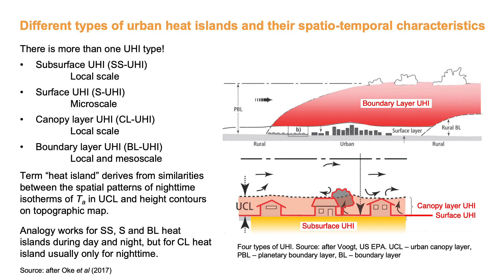The canopy layer urban heat island is the difference between the temperature of the air contained in the urban canopy layer, which is defined as the layer between the urban surface and the mean roof level, and the air temperature at an equivalent height above the surrounding rural ground. It is a local or neighborhood scale phenomenon.